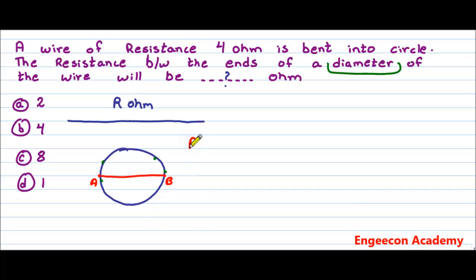As we know that resistance is directly proportional to length, and in this case, for example, the length is half. So the resistance of this portion will be half, as R divided by 2.